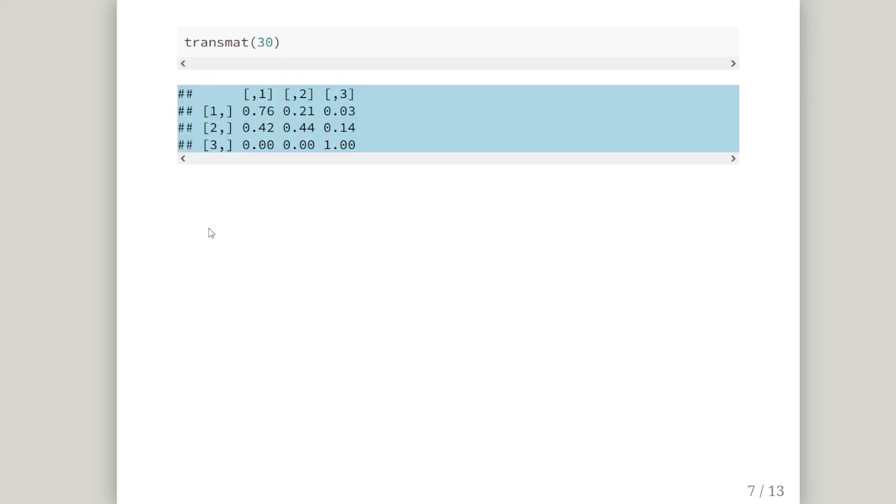So let's have a look at the transition matrix for a 30 year old. So the probability of being healthy and remaining healthy is 0.76, the probability of being sick is 0.21 and the probability of being dead is 0.03. If you are sick at 30 years old, the probability that you'll be healthy next year is 0.42,